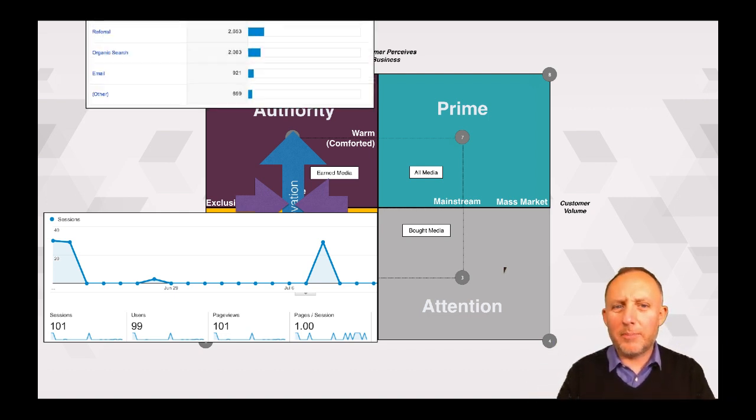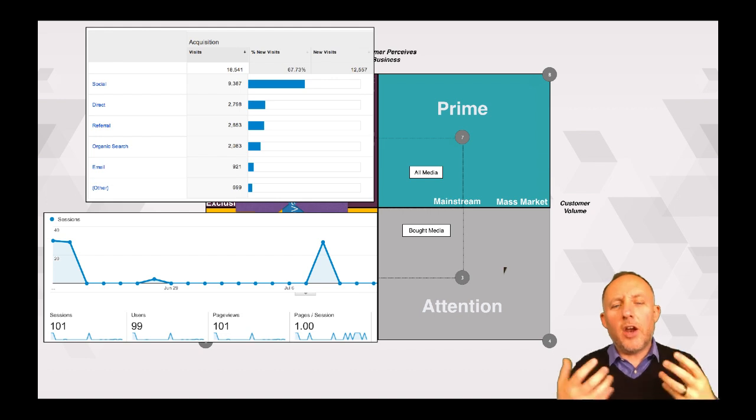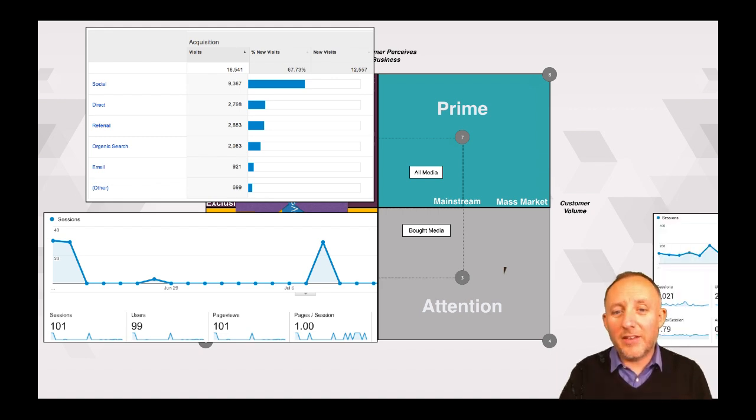Authority brands, however, have got a completely different profile and characteristic in their analytics. They receive lots of attention through social media. Why? Because people are sharing what they've published. They're getting lots of direct and organic referral links. Why? Because people are repeating what they're saying. They're the innovator. And that earned media is a really strong indicator that we're moving into an authority position. So a play between one strategic position and another, the data really starts to come to life and help us plot our journey and help us see if we're getting there.